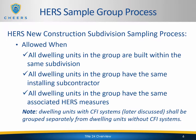Once you've taken care of the model testing and identified which plans will be built, you can start determining which other dwelling units can be included in your sample group. In order for dwelling units to be included in a group, they must meet three criteria: they have to be built within the same subdivision, they have to have the same installing subcontractor for the measure being tested, and all the dwelling units have to have the same associated HERS measures. Production builders will build subdivisions or projects, and all the homes have to be in that same subdivision.